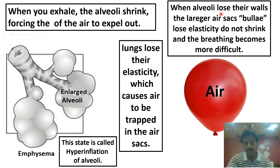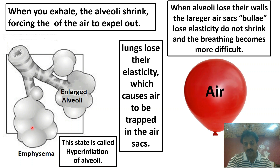When the alveoli lose their walls, the larger air sacs — blebs — lose elasticity, do not shrink, and breathing becomes more difficult. جب دوسرا air intake کریں گے تو پہلے سے موجود air oxygen کو اندر diffuse ہونے نہیں دیتا، جس کی وجہ سے shortness of breath ہوتی ہے۔